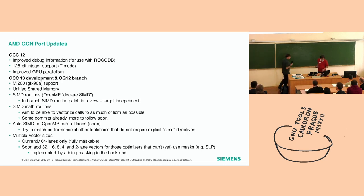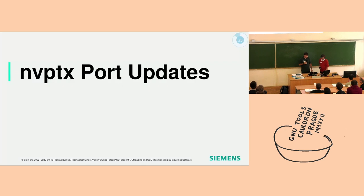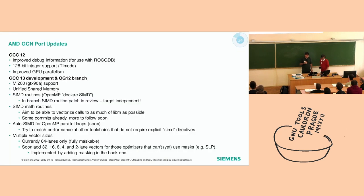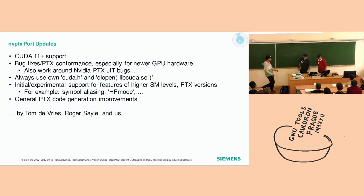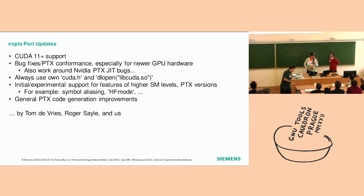For some OpenMP constructs, the spec is clear there can't be any inter-iteration dependencies anyway. Like with a distribute construct with no dist-schedule, the implementation can choose any scheduling, so iterations are independent and we can set SafeLen to INT_MAX. For the vectorization flag, at O2 we vectorize by default, so setting it would only matter for O0, O1, Og, and Os, which we probably don't want. The SafeLen is the more important flag, and we can only set it for some constructs with some clauses or lack thereof. We're also adding multiple vector sizes since 64-lane vectors are too big for most things and SLP won't use anything that doesn't fit precisely.